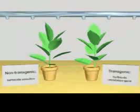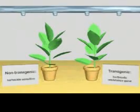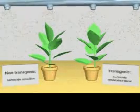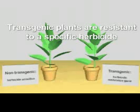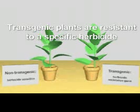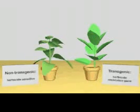The transformed callus can subsequently be cultured on agar plates containing the appropriate plant hormones and antibiotic to select only those plants that have been transformed. The result are whole transgenic plants exhibiting the trait of interest, in this case, herbicide resistance.